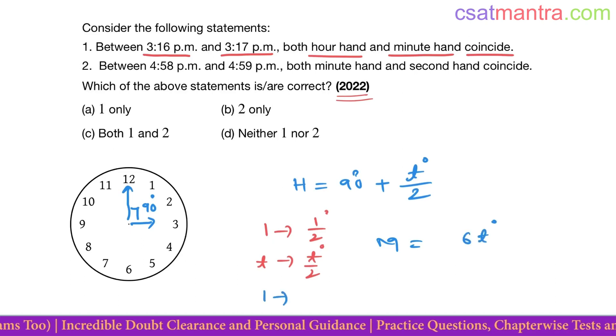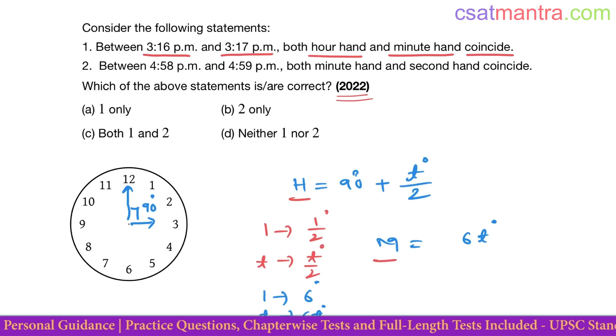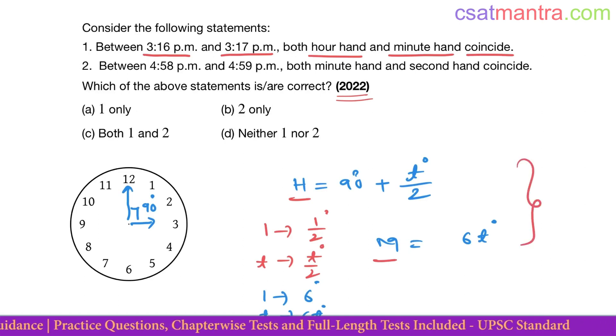Now when hour hand and minute hand coincide, these two degrees should be same. Okay, the angle made with respect to 12 o'clock base, these two angles would be same. Now I'm equating 90 plus t by 2 is equal to 6t. Okay, degrees on both sides gets cancelled out.